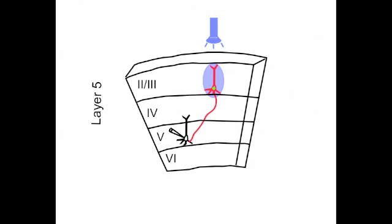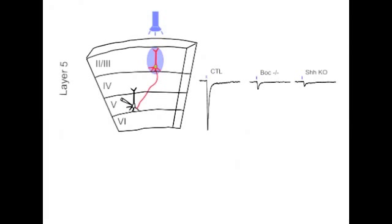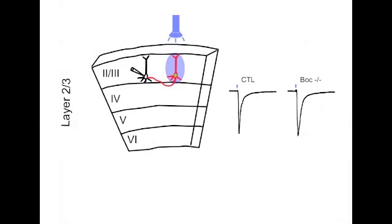Finally, we were able to test for changes in functional connections between layer 2-3 and 5, this time by electroporating channelrhodopsin-2 and performing channelrhodopsin-assisted circuit mapping, where we found a significant reduction in connectivity between layer 2-3 to layer 5 connections, while normal layer 2-3 to 2-3 connectivity did not change in our mutants.